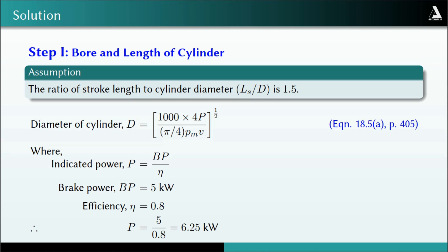In this relation, P is the indicated power, calculated as BP divided by eta. BP is 5 kilowatts and eta is 0.8, therefore the indicated power P is 5 / 0.8, which equals 6.25 kilowatts.